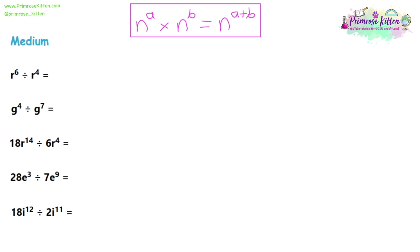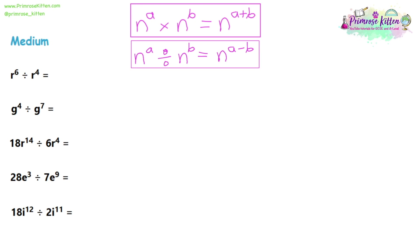Moving on to the medium questions, which are divide questions. There is a rule of indices for these: if you have a base number with a power and you're dividing it by the same base number to a power, that's the same as taking away the powers. Looking at question one, the base is A on both sides. We've got power 6 and power 4. It's a divide question, so we take the powers away: 6 take away 4 is 2. The answer is A to the power of 2.